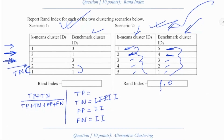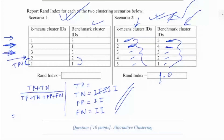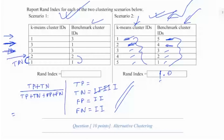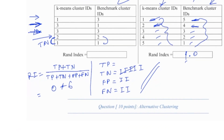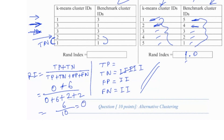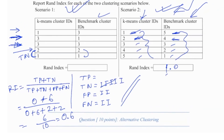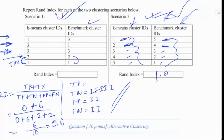So we have gone over all pairs and computed TP, TN, FP, and FN. We can now compute the RAND index: TP is 0, TN is 6. In the denominator, we have 0 plus 6 plus FP which is 2, plus FN which is also 2. So it's 6 over 10, which makes the RAND index 0.6. Our final answer is RAND index equals 0.6.